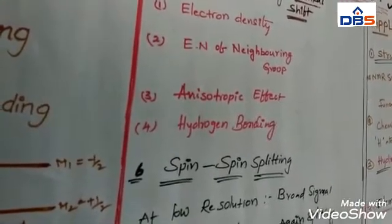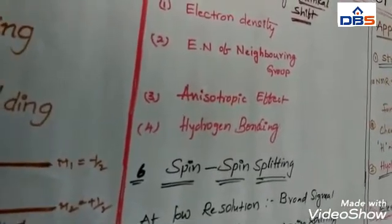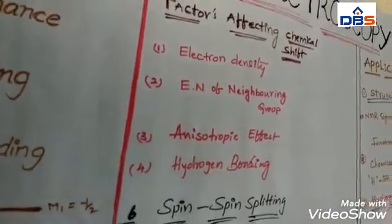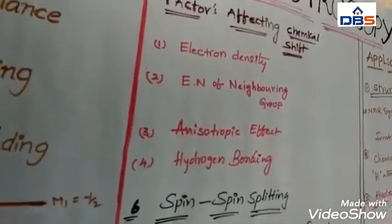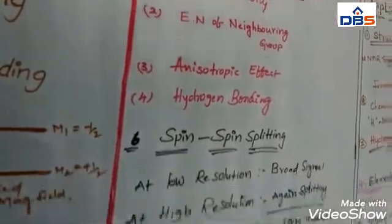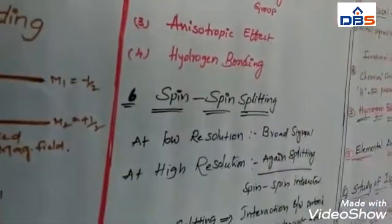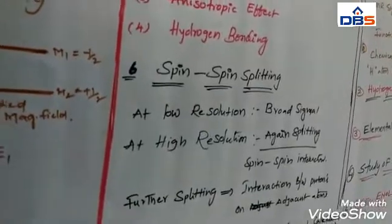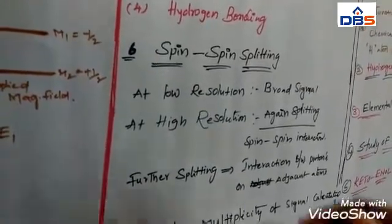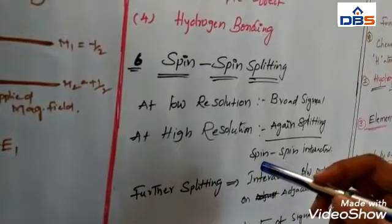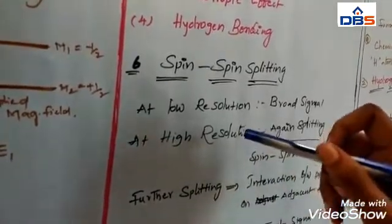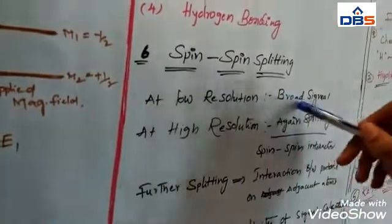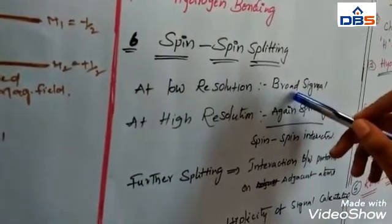After that, we can discuss about spin splitting of the compound. Generally, the NMR spectrum of any compound at low resolution forms a broad signal. But the same compound at high resolution goes for further splitting by interaction of proton spin-spin interaction. The further splitting of the compound always depends on the interaction between the protons and adjacent atoms.